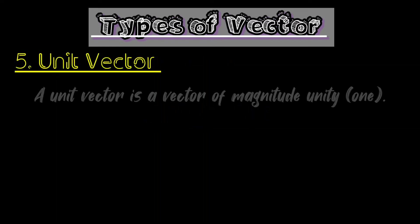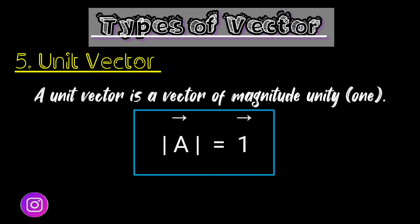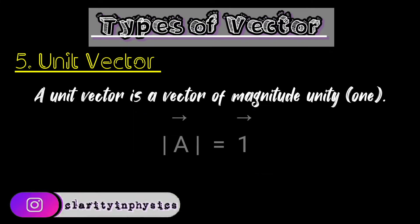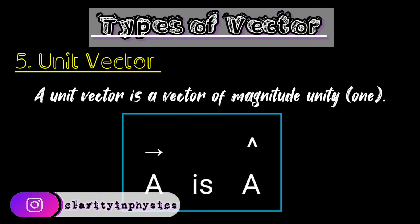Unit vector: a unit vector is a vector of magnitude unity, or we can say a vector whose magnitude is one, is called a unit vector. The unit vector for vector A is written as A-cap.